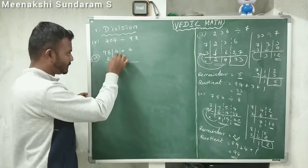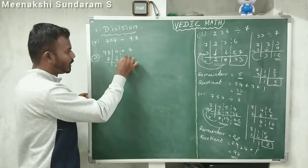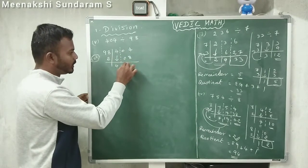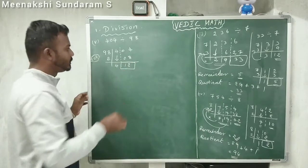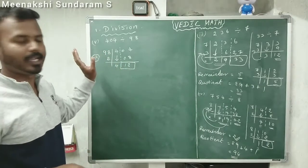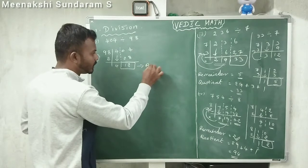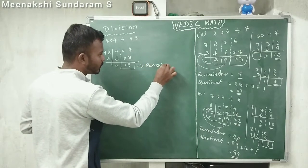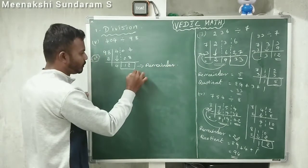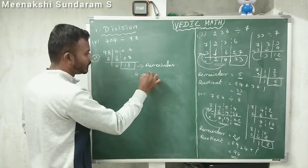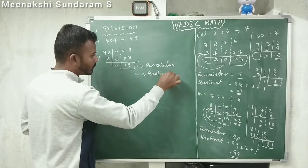Bring down the first number 4. Multiply 4 into 2: 8. Add 0 plus 8, giving 12. Now 12 is less than 98 — the divisor — so we can fix it. Remainder is 12, quotient is 4.